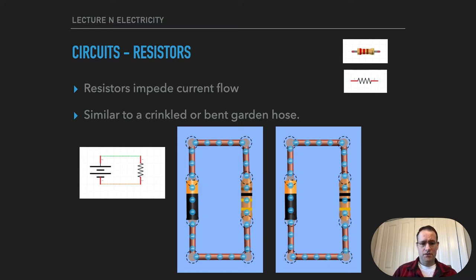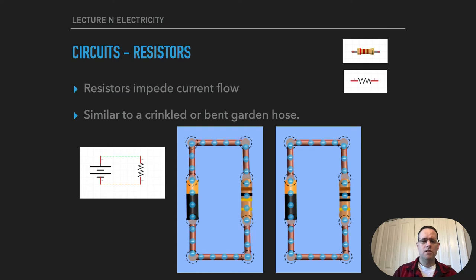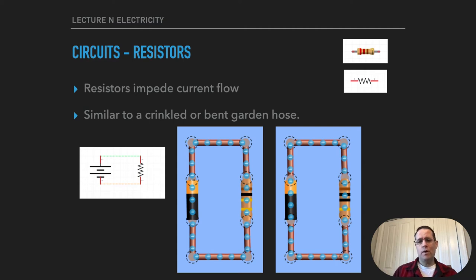Here we have two circuits: the one on the left has electrons moving around the circuit very fast — that's low resistance. On the right, there's a higher resistor so the electrons are flowing more slowly — that's high resistance. So with low resistance, the current is higher and electricity travels very quickly, and with high resistance the electricity travels more slowly. We'll talk more about where we can find resistors later.